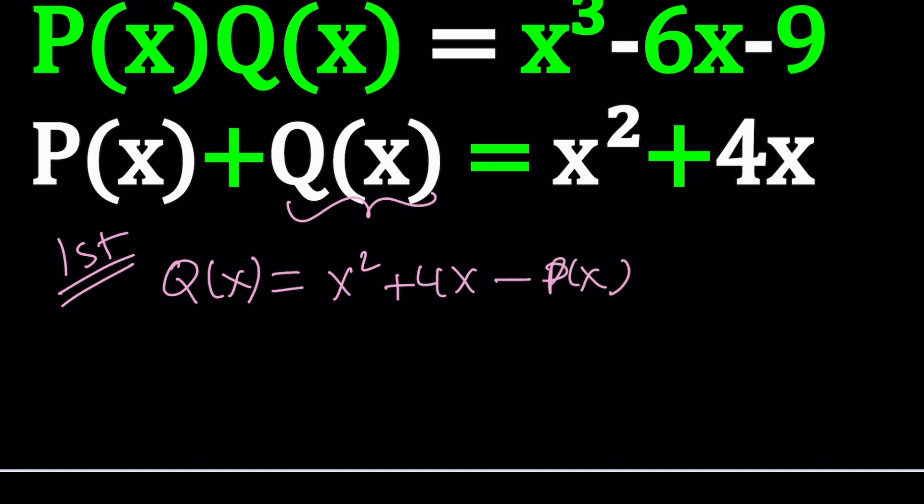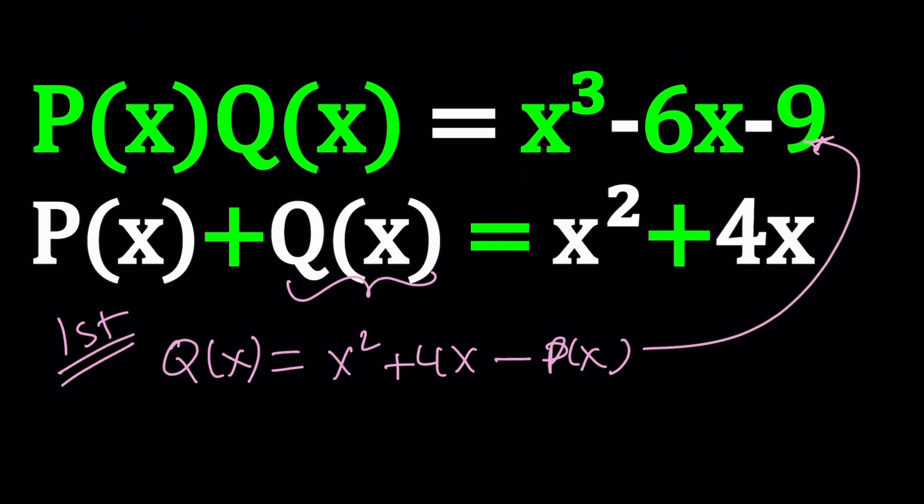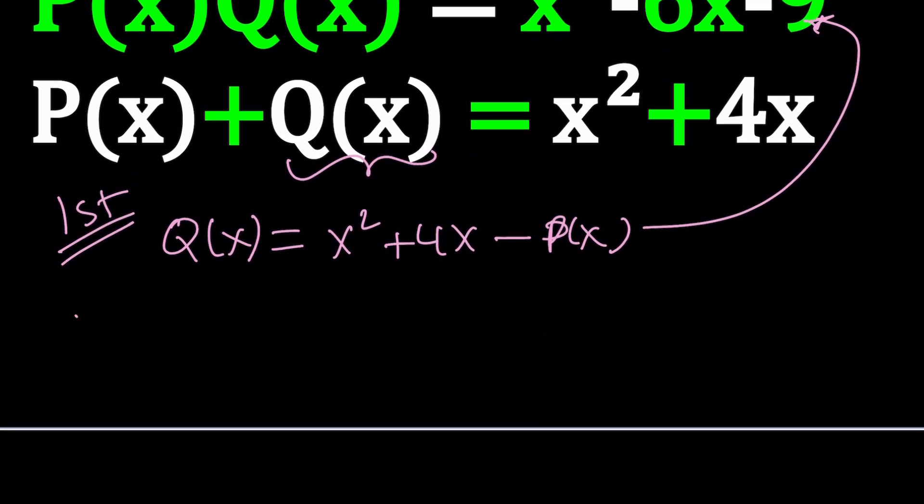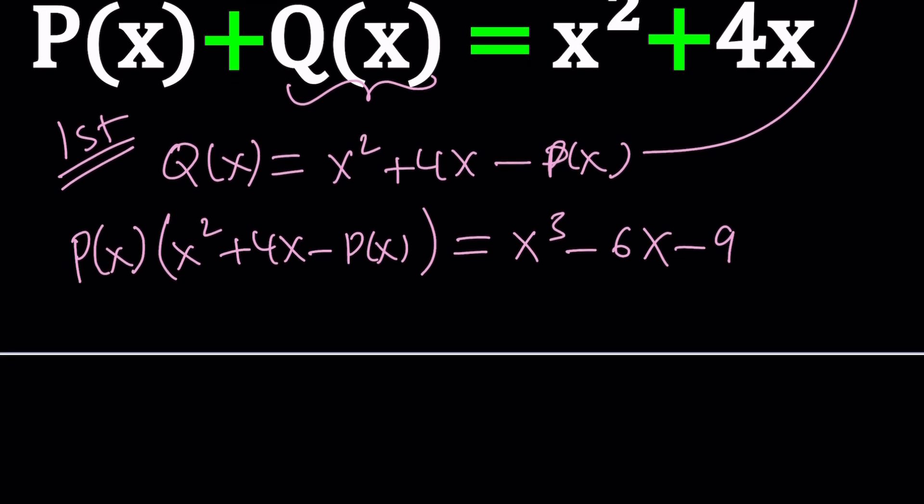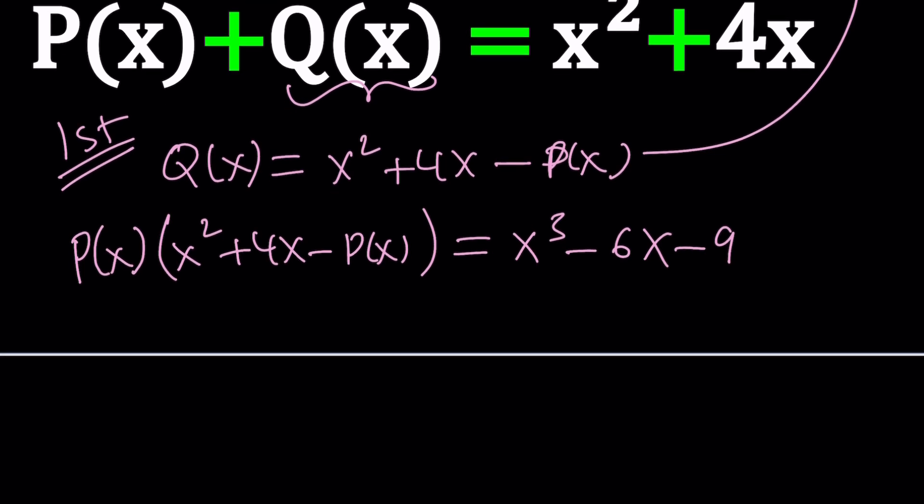So my goal is to write everything in terms of P(x). I substitute this into the first equation, which is the product. So now P(x) multiplied by Q(x), which I can replace with this, and the product equals x³ - 6x - 9. Now my goal is to solve for P(x), because that's the only variable. I'm trying to find P(x) in terms of x.